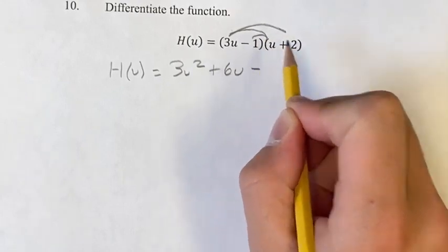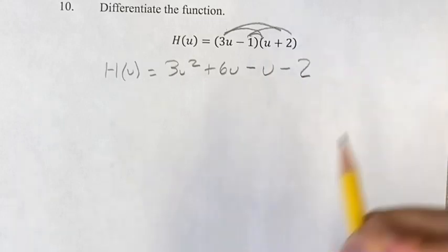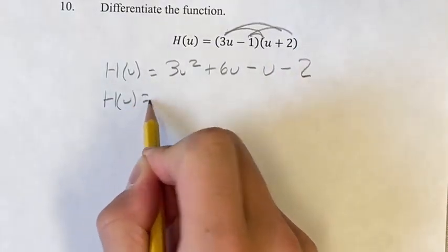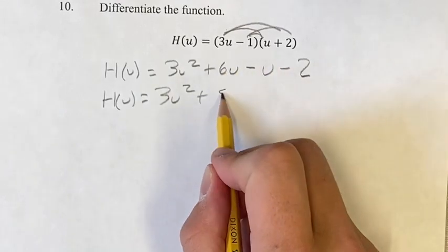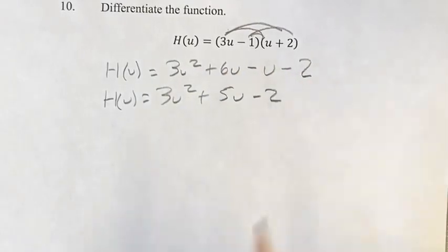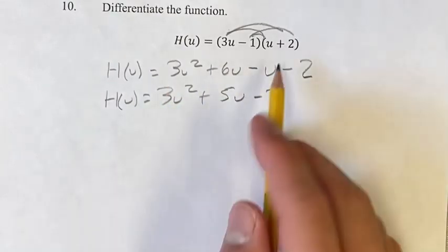Minus 1 times u is u, minus 1 times 2 is 2. So h of u equals 3u squared, plus 6u minus u is 5u minus 2. Now we can go term by term, find the derivative of each one. That's going to be easier than doing this.